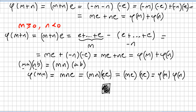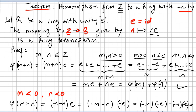This concludes the proof. We have shown that if R is a ring with unity, then the mapping from the integers to R given by n ↦ n times the identity is a ring homomorphism.